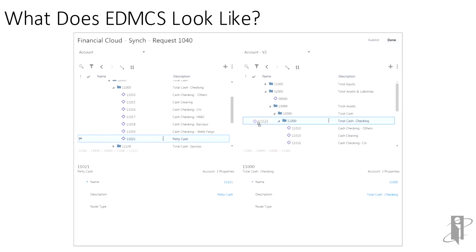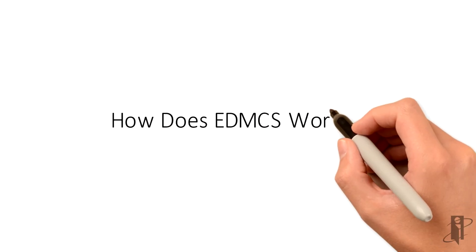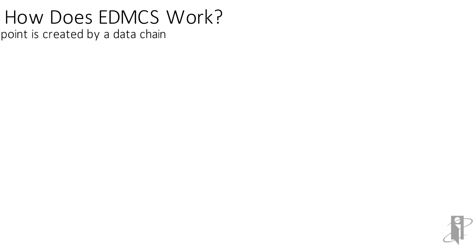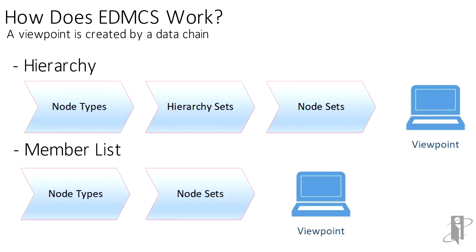Here's a screenshot of a user synchronizing hierarchies. You can actually drag and drop between hierarchies. A viewpoint is created by a data chain. A viewpoint is really a filtered-down view of the data containing the members that a particular user is authorized to work on. The difference from DRM technology is that the detail members or nodes are held separately from each other. They are put together based upon the user's permissions of what they are allowed to update, change, or delete.